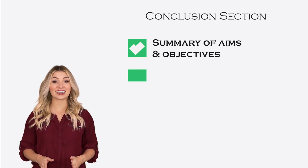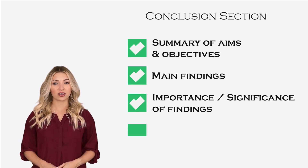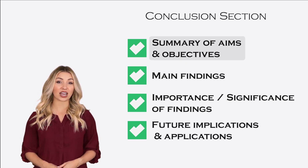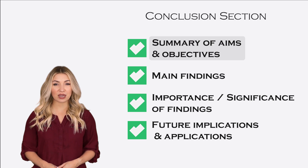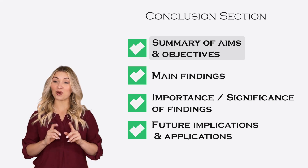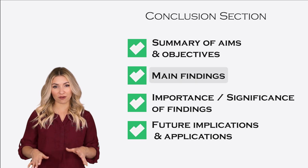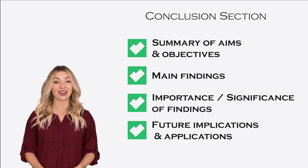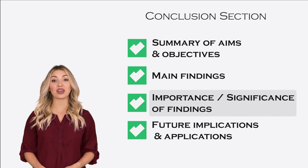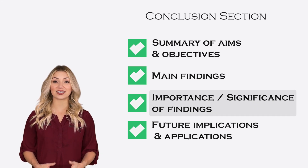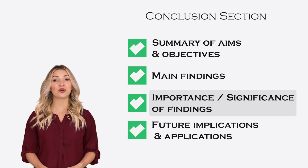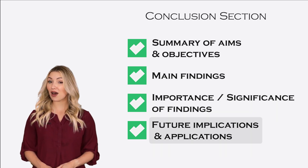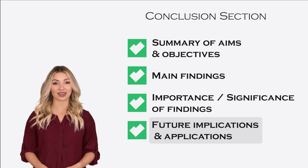This section typically contains the following components. You can start by reminding your readers about the aims and objectives of your work — keep it brief, preferably in one or two sentences. Then you can highlight the overall findings and explain what we have learned from your study. Then you can talk about the importance and significance of your findings. Finally, you can finish up by talking about the future implications and possible applications of your work.